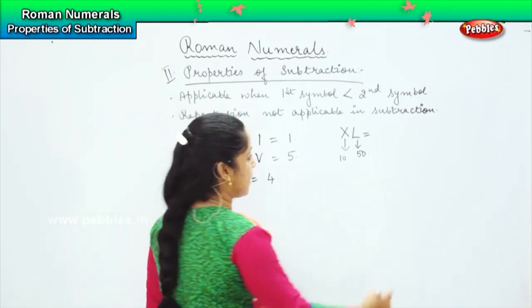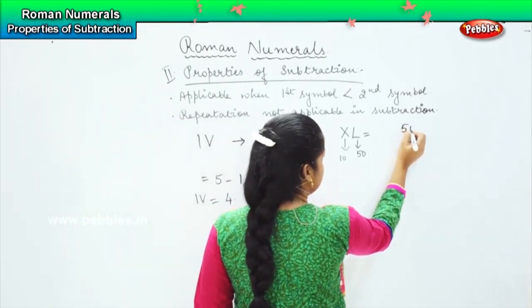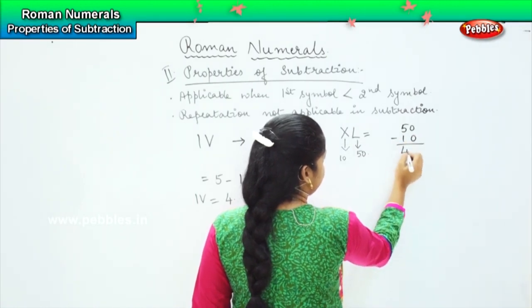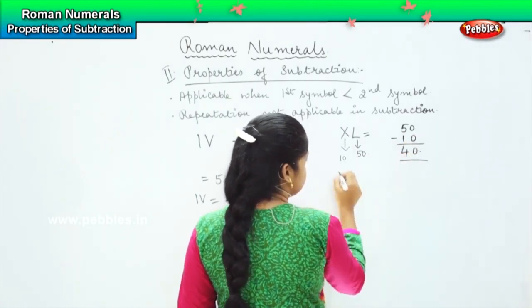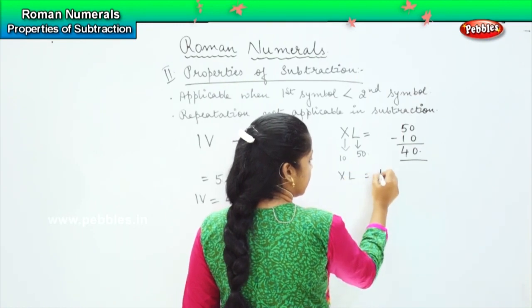So 50 minus 10 equals 40, which means that the value of XL is equal to 40.